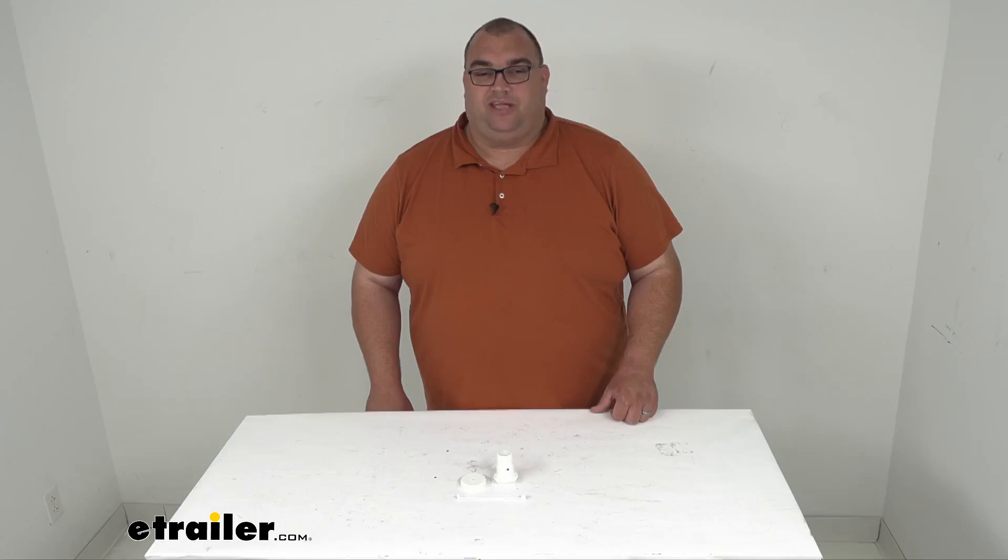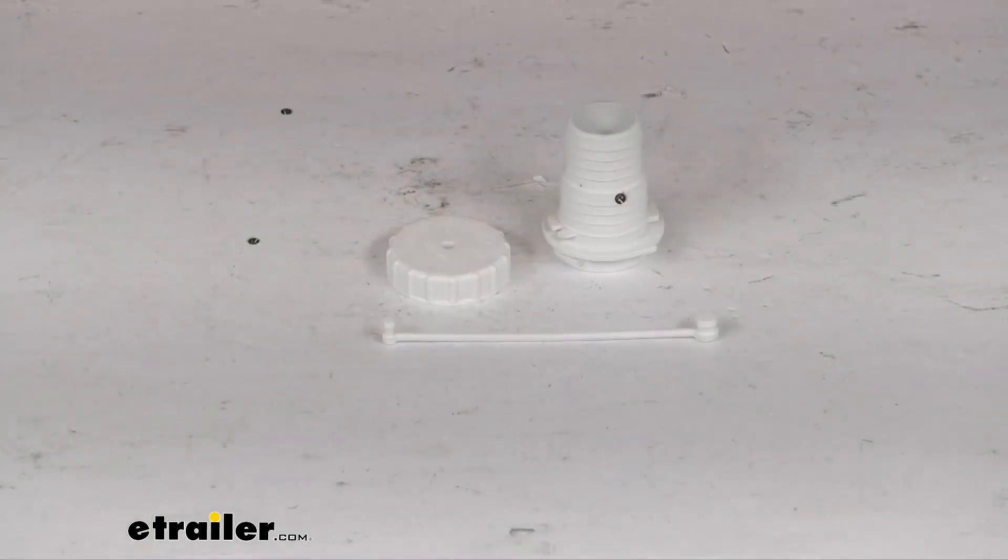Hello there neighbors, Steven here with etrailer.com. Today we're looking at a replacement twist-on fill cap with spout for your RV BNB gravity fill, and it's going to be a polar white color. Now folks, this will simply replace your RV's gravity fill nozzle cap.